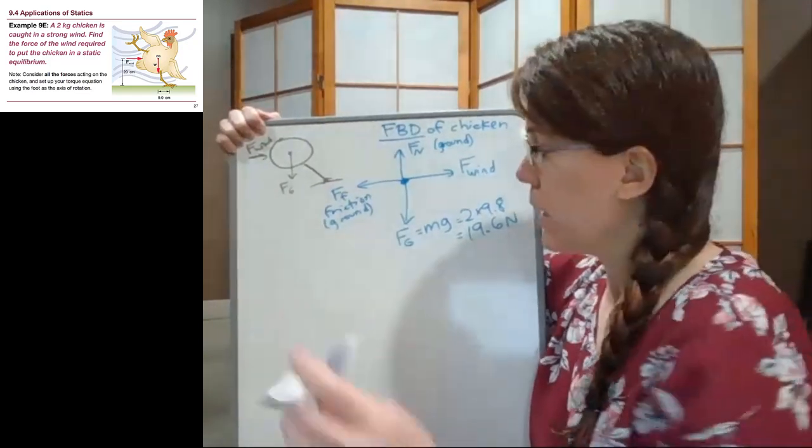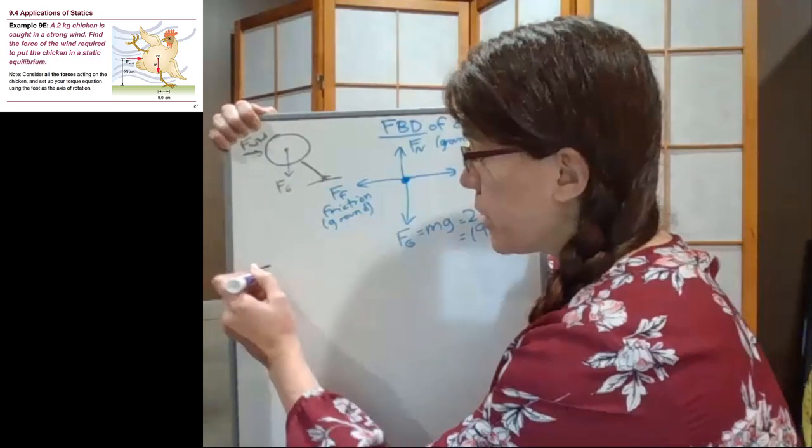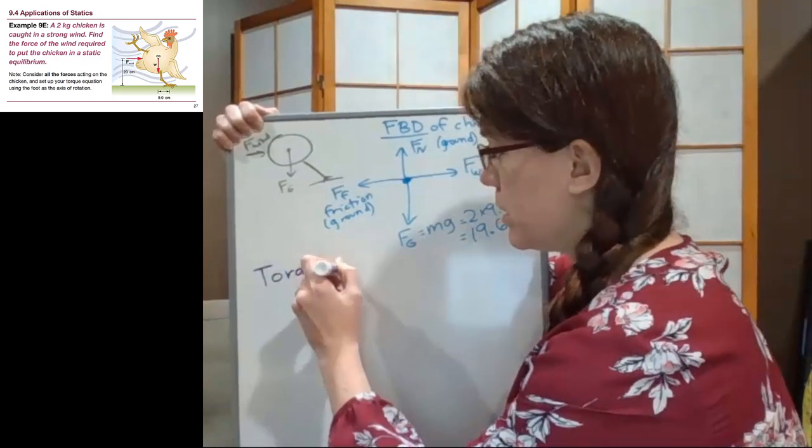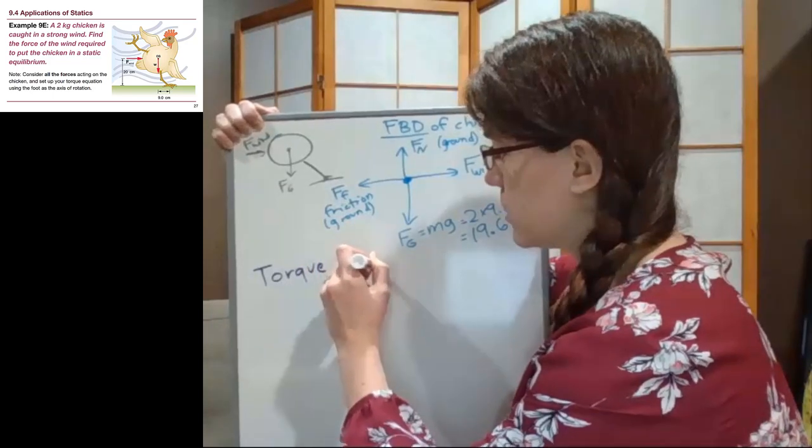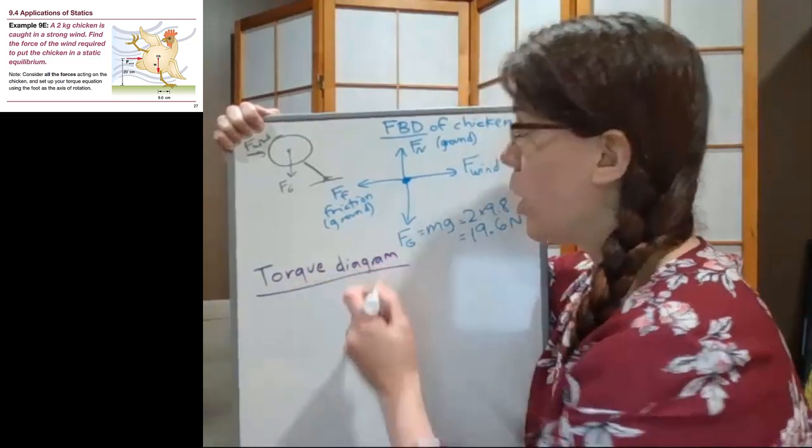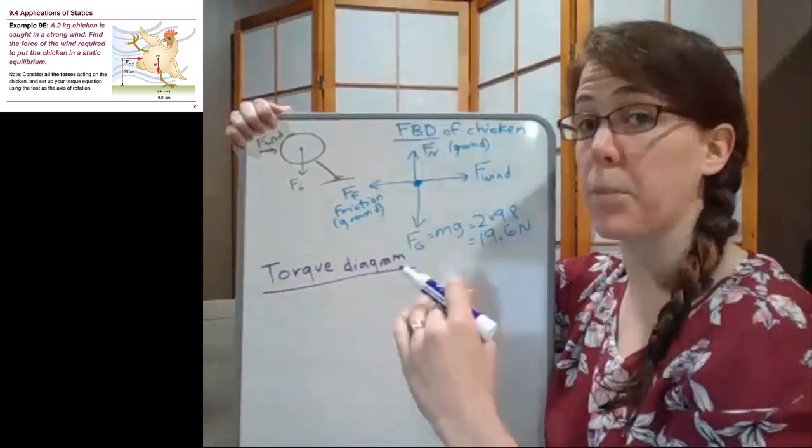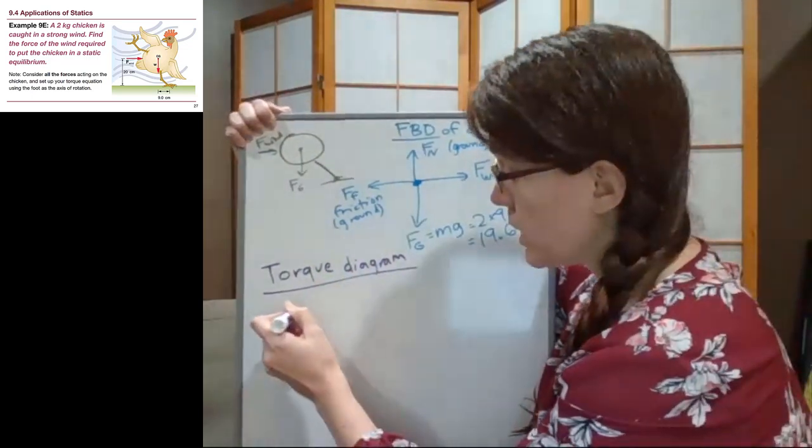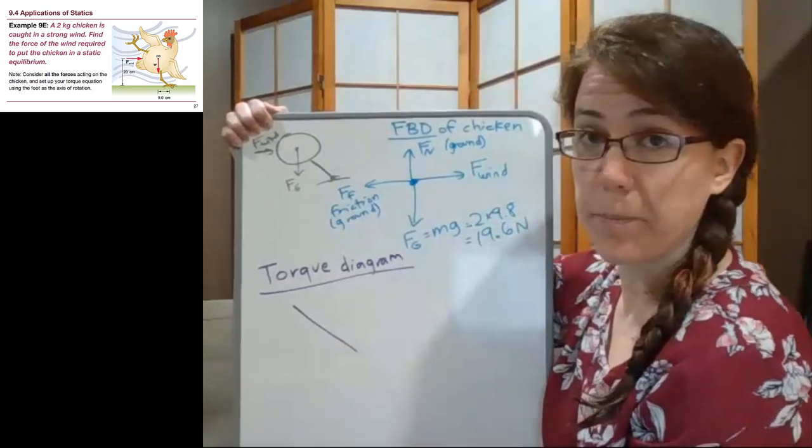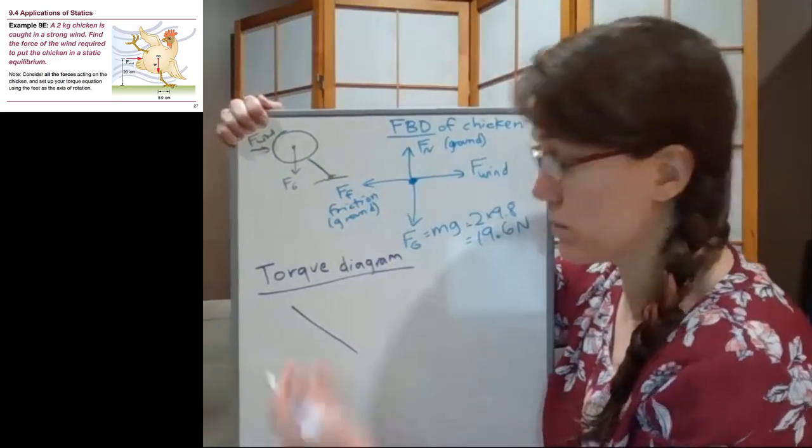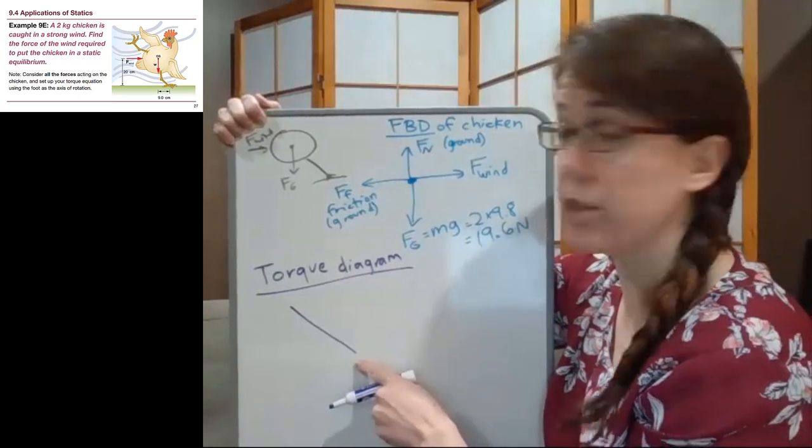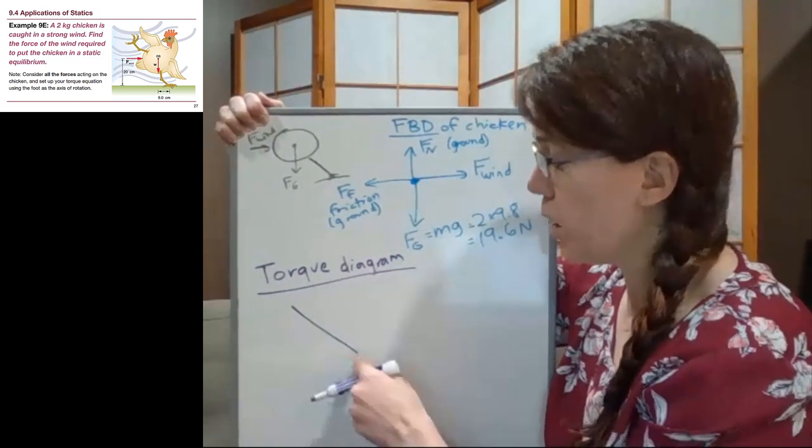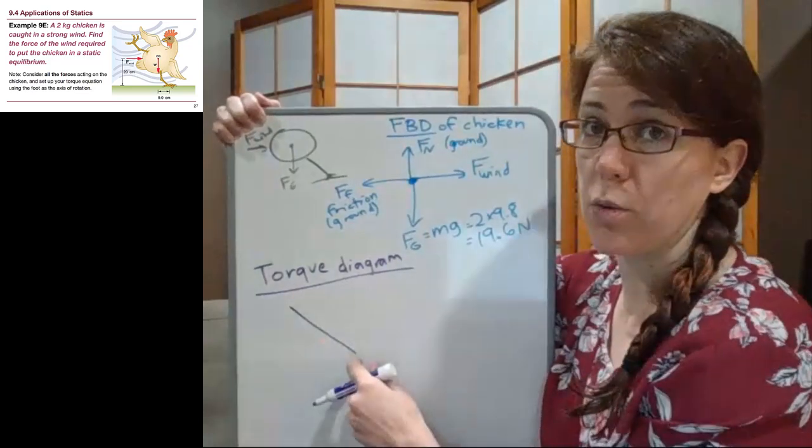So it is important for us to recognize something here that is true for this diagram that has not been true before. Our chicken is not perfectly upright and is also not perfectly flat. This is an object that is at an angle, so we need to draw that object. The simplified object, now we really don't want to draw a picture of a chicken down in our torque diagram, has to be at an angle.